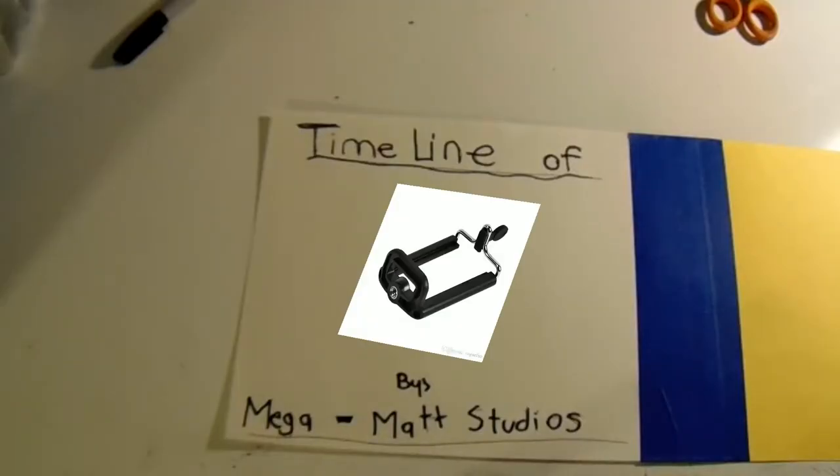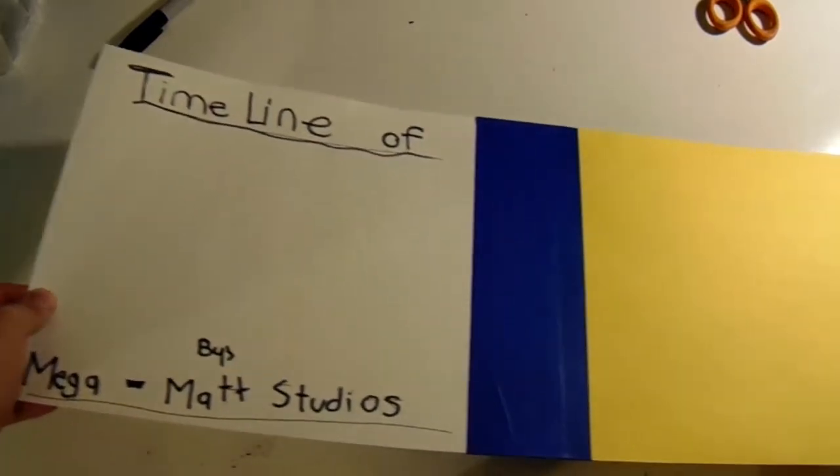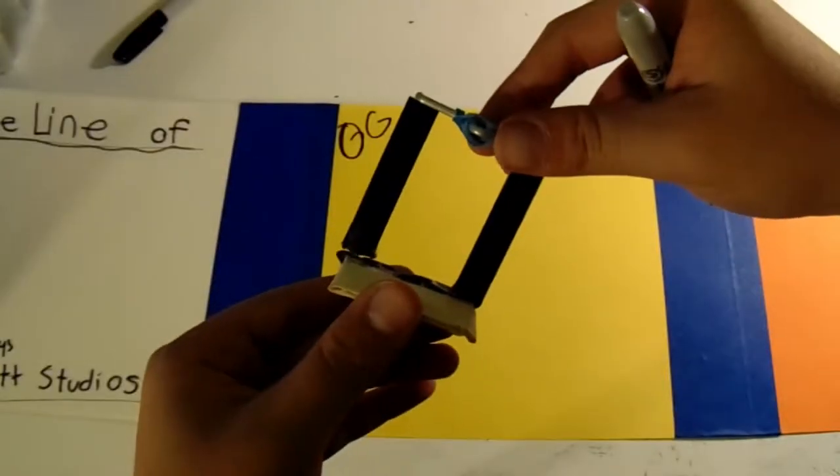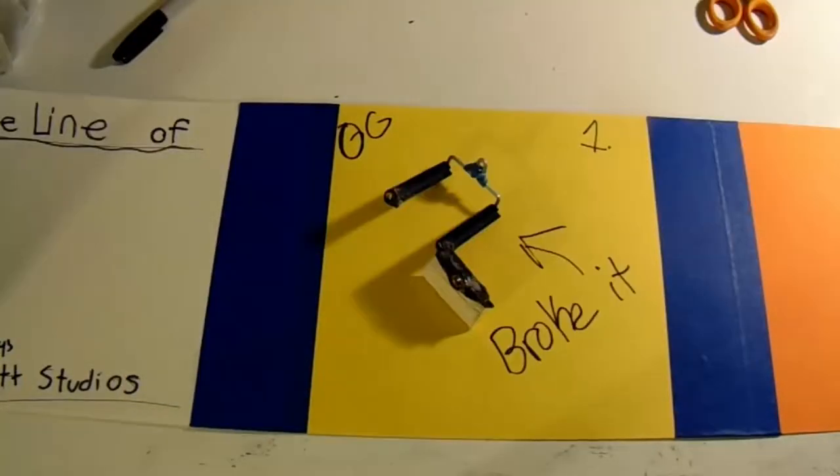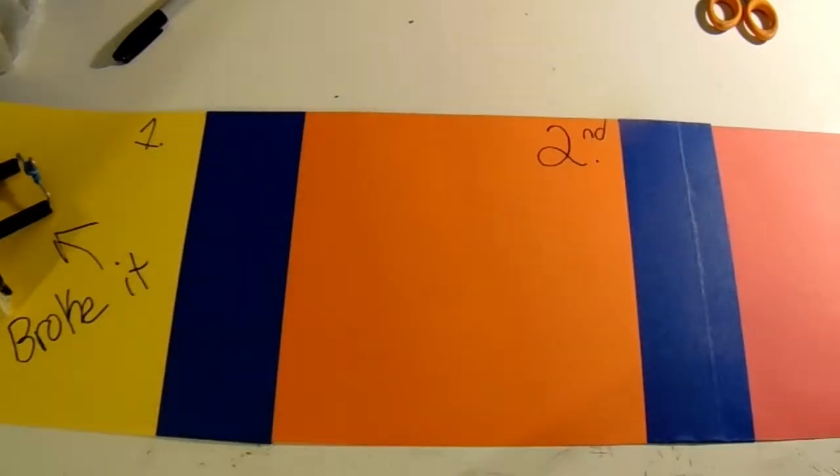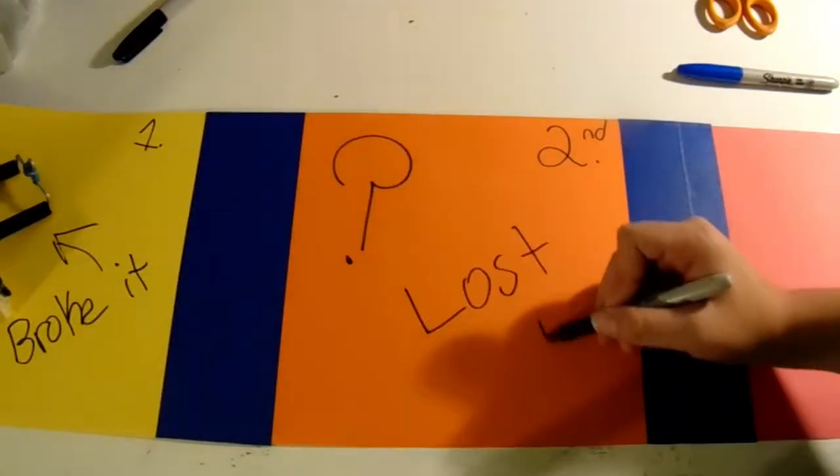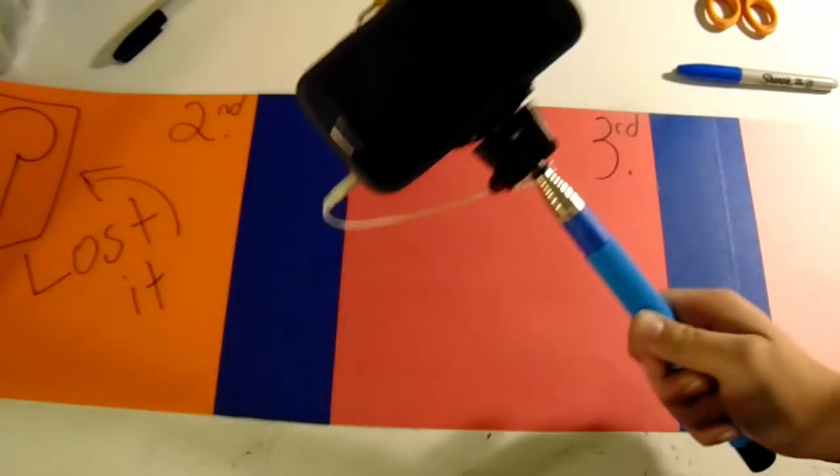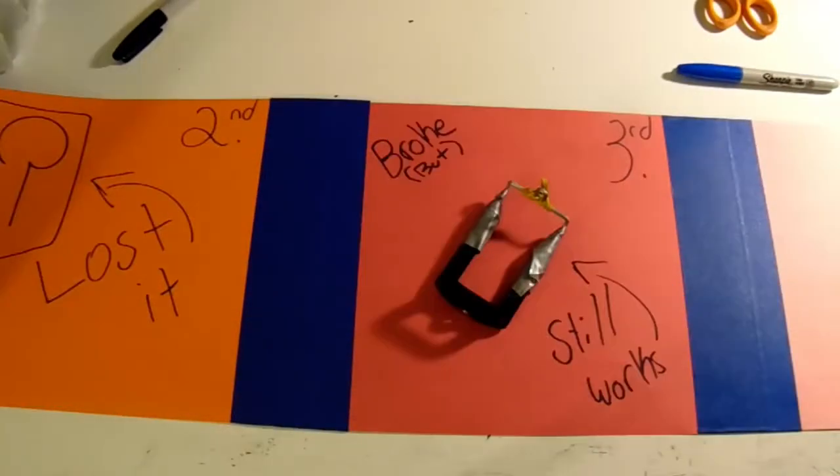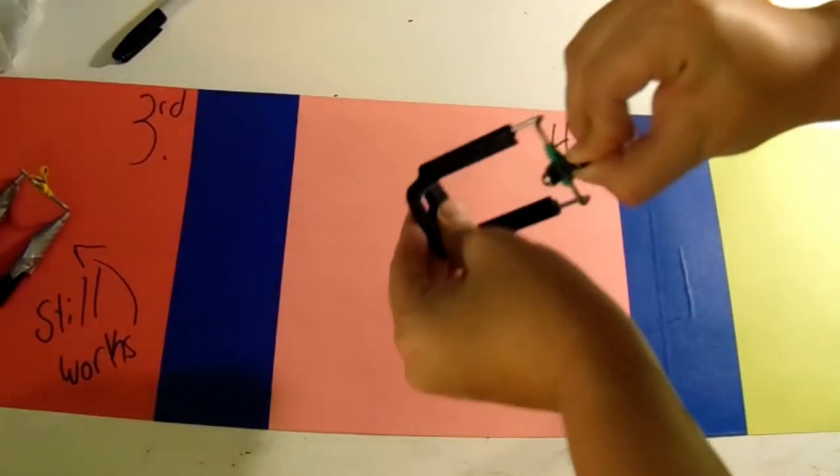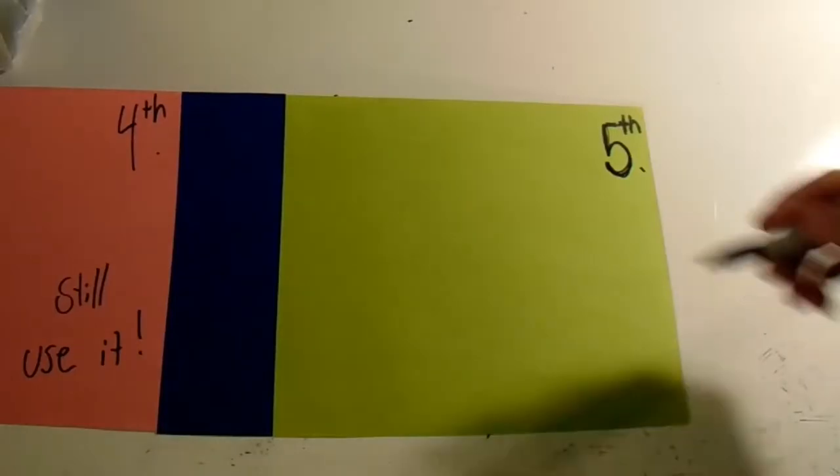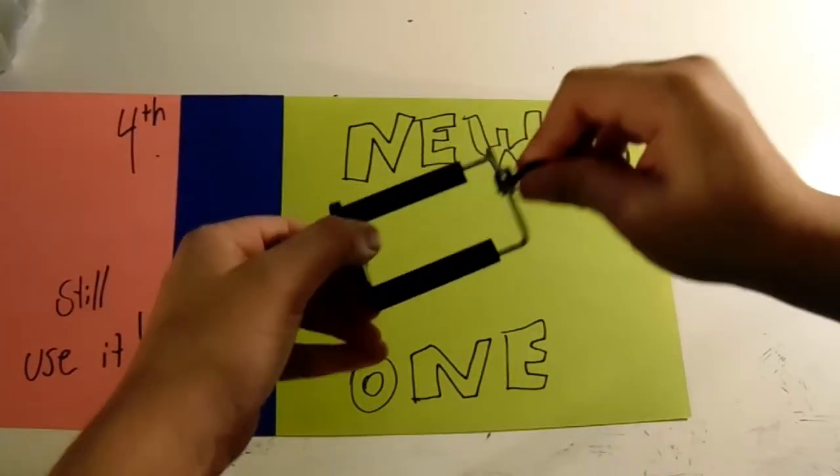And now, a brief history timeline about the cell phone mount. My first, OG, which I broke. My second, which I lost. My third, broke that, but it still works. My fourth, it still works. In fact, I still use it. And now my new one, the one I'll use for my timer.